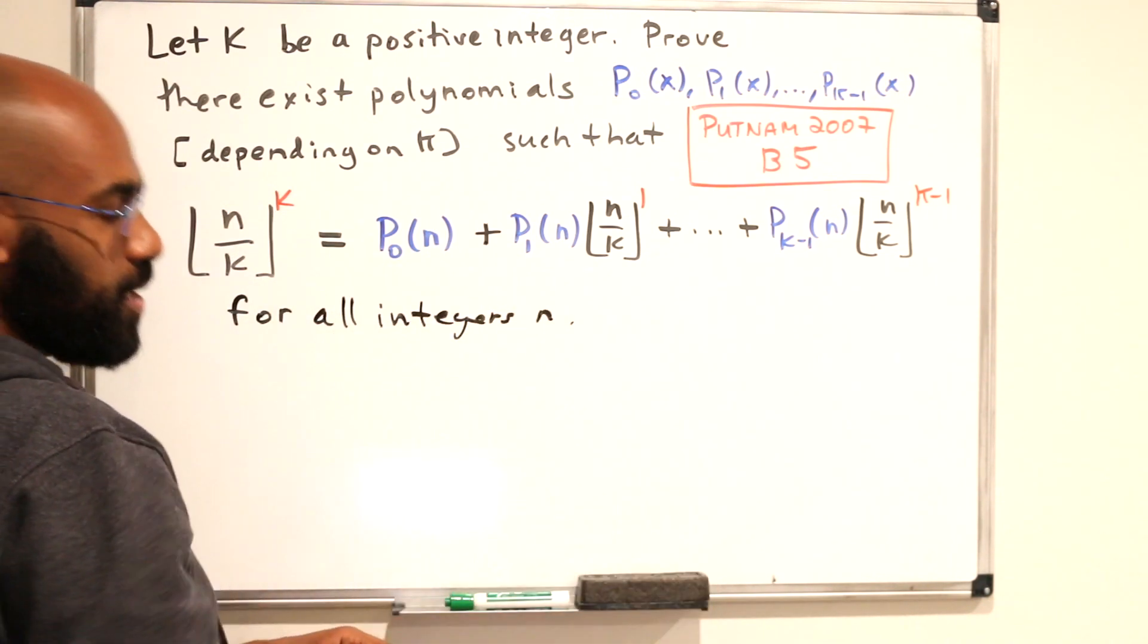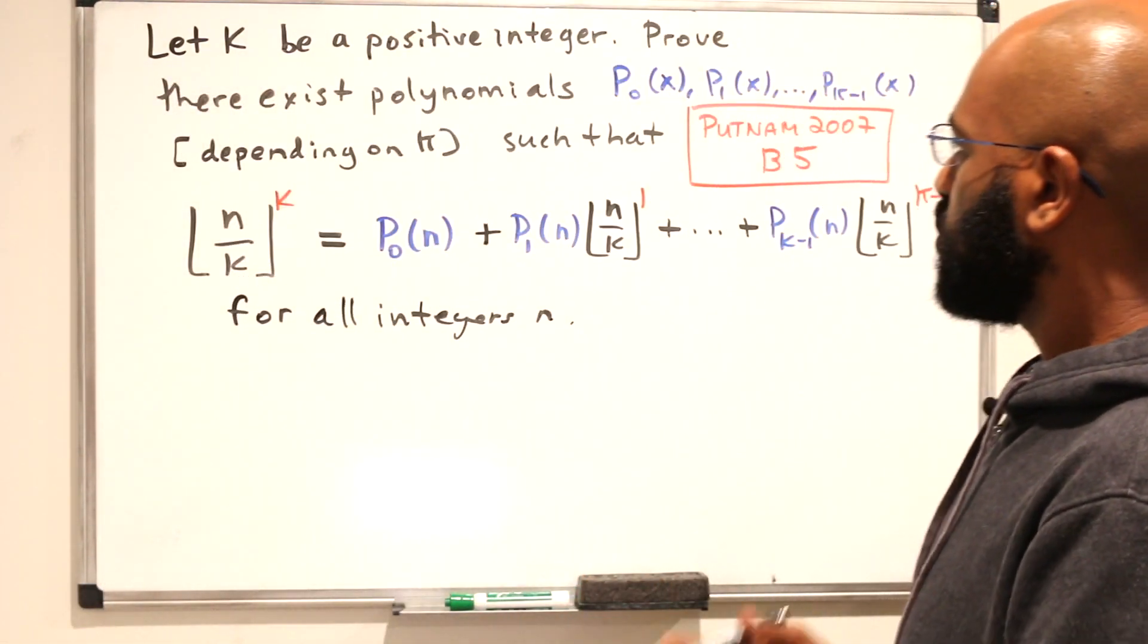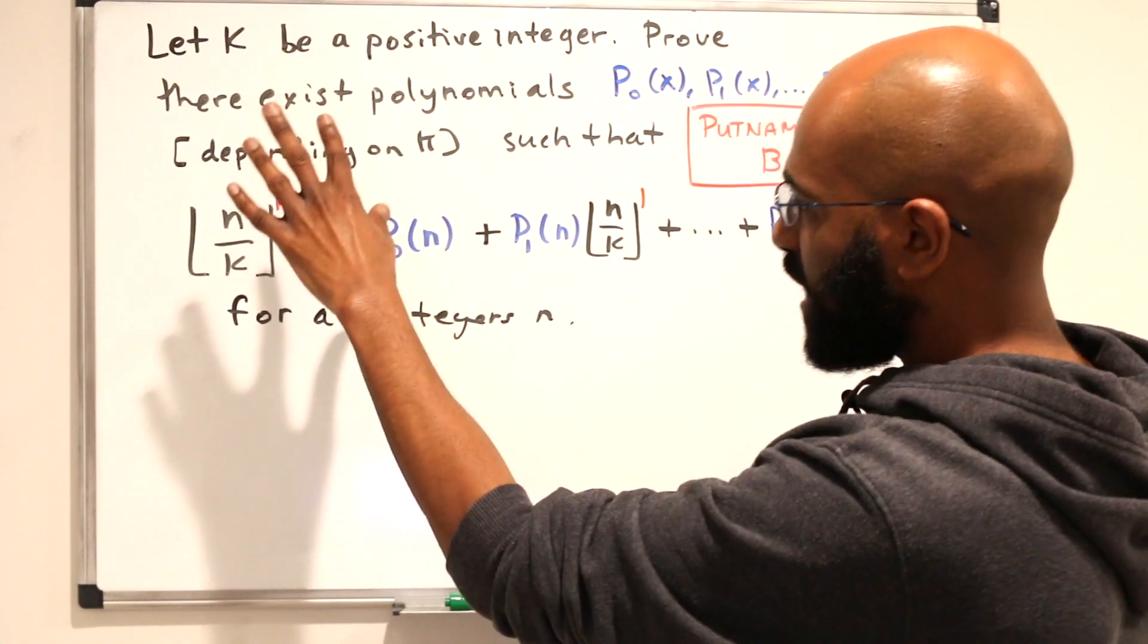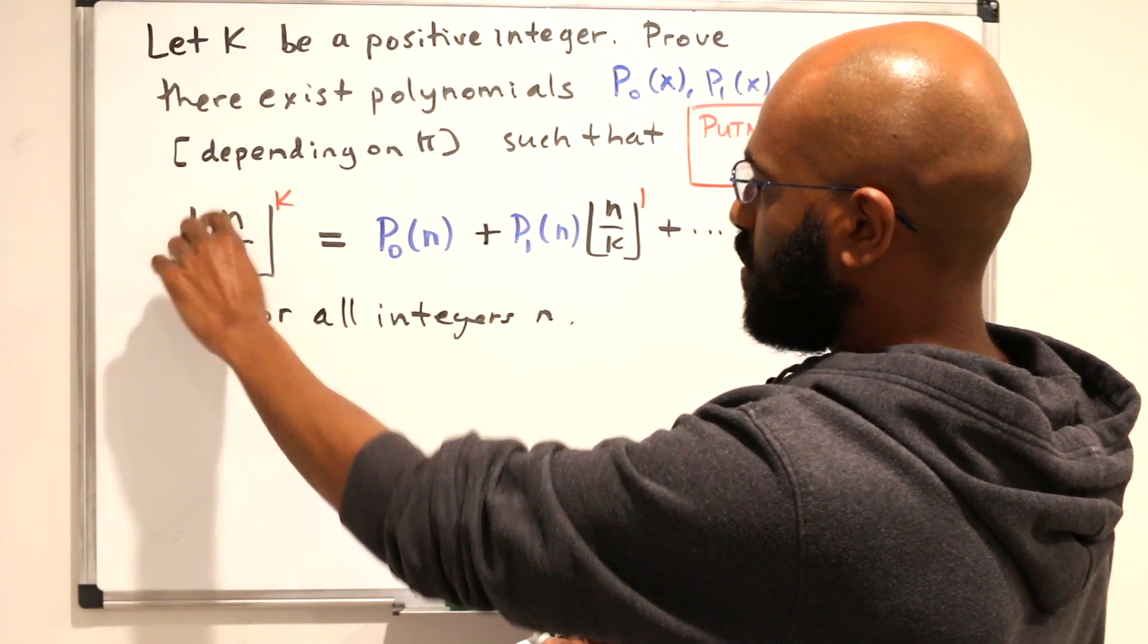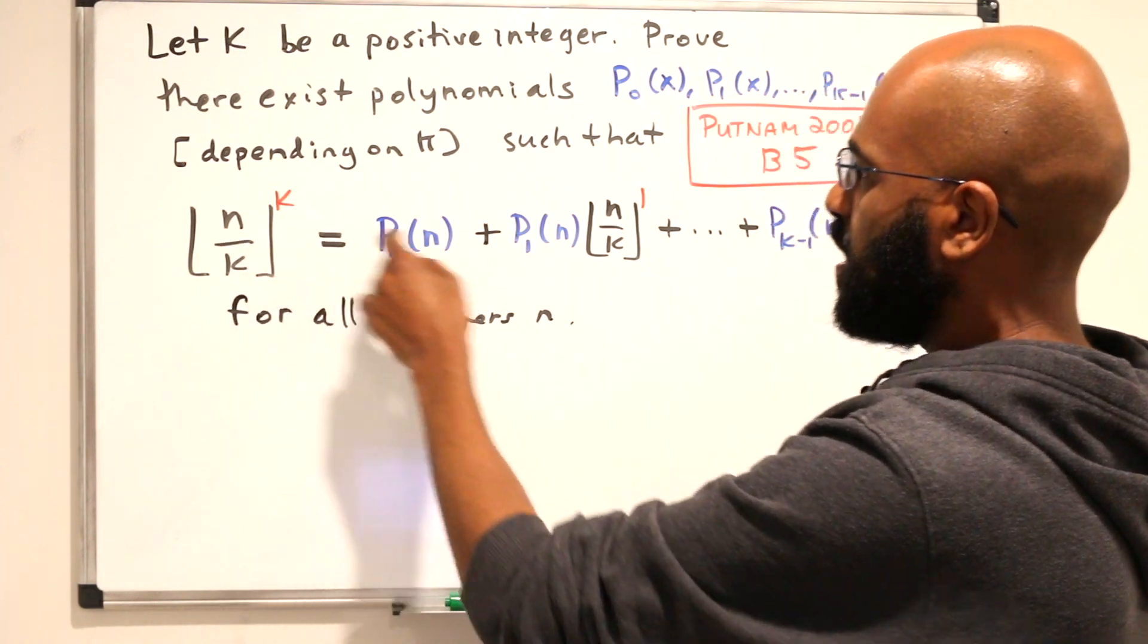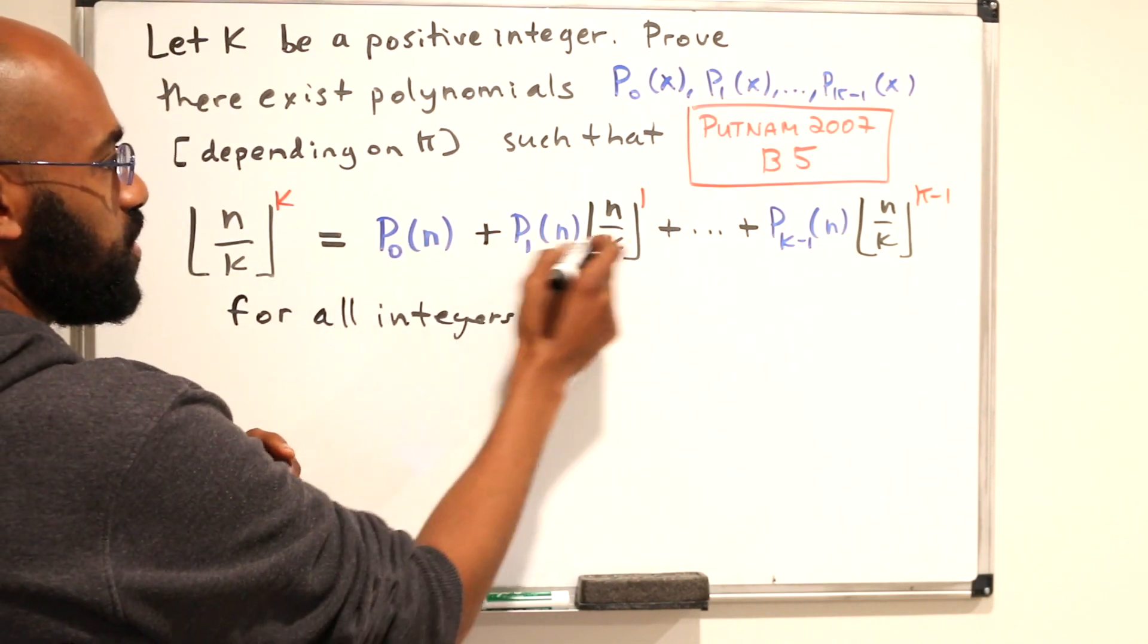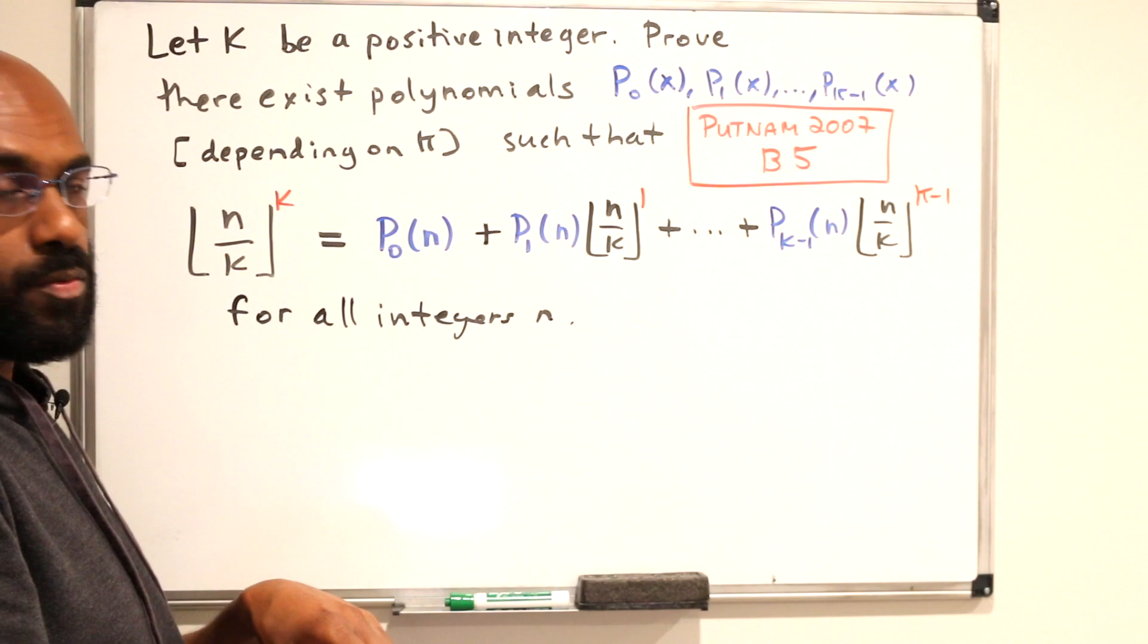Okay, so there's a lot to unpack here, but let's just get a flavor before we actually dive in. So what this is saying is you can, for any, you staple k to the floor and for any positive or any integer n, the floor of n over k raised to the power of k can be represented in this way where these polynomials have as input this number n that we started with.